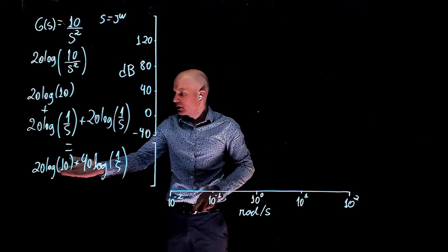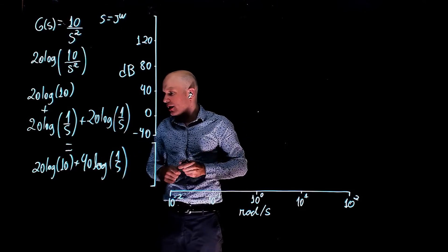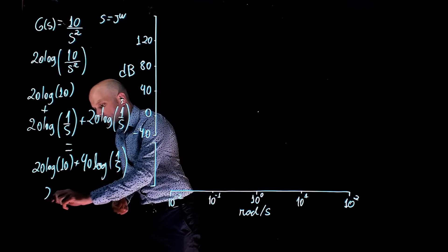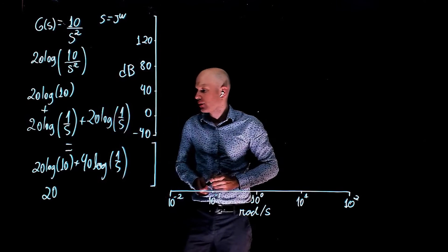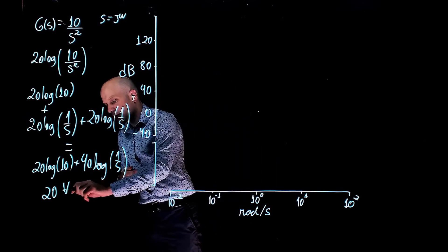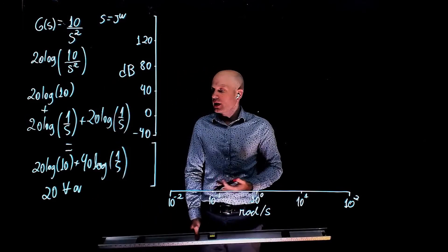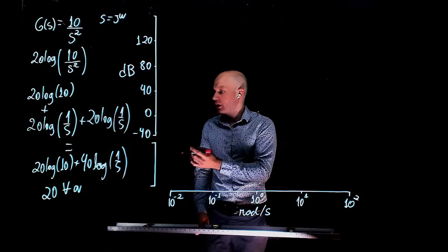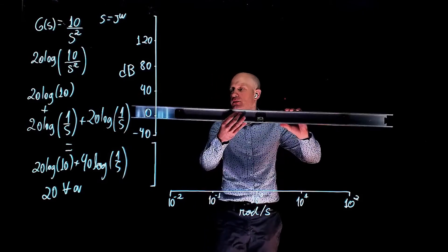Let's start with the constant gain: 20 log of 10. Log of 10 is 1, so this gives simply 20. And this is for all frequencies. So 20 decibels for all frequencies is simply a straight horizontal line that represents that constant gain.